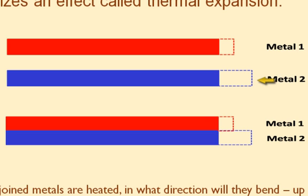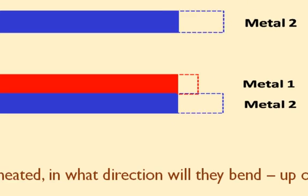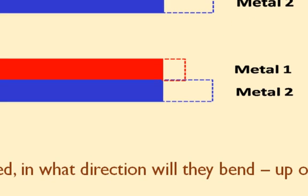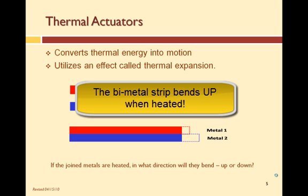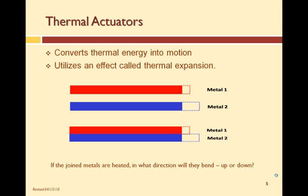When these two metals are heated, metal 2 expands more than metal 1. Therefore, metal 2 has a higher temperature coefficient than metal 1. Now, let's join these two strips together. Since they are joined and each metal is expanding when heated, but expanding at different rates, the strip bends. In this case, which direction does the strip bend? If you said upward, you are correct. Since metal 1 does not expand as much as metal 2, one could say it pulls metal 2 upward. This bending is due to thermal expansion.